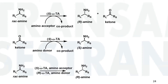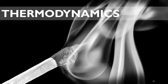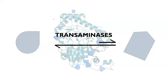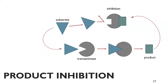A big problem of transaminases, however, is their thermodynamics. The equilibrium of transaminases is usually favored toward the reactant side. Moreover, we also have the problem of product inhibition, where the ketone formed as a byproduct inhibits our enzyme, and therefore not that much substrate can be converted to product.